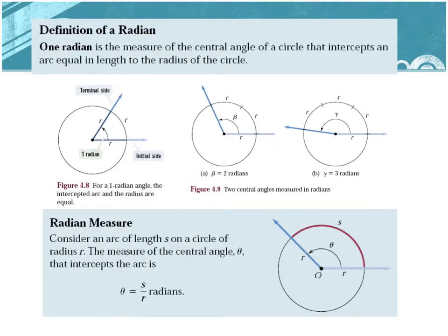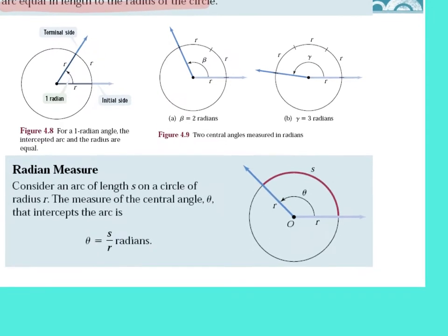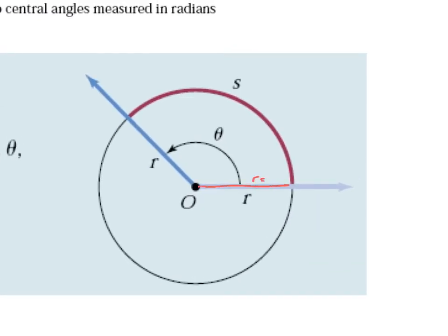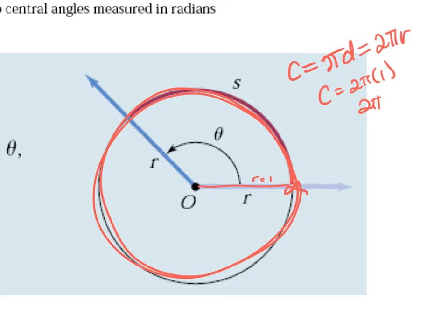There are two ways to measure angles: radians and degrees. A radian is the measure of the central angle of a circle that intercepts an arc equal in length to the radius. Most radian measures are based on a radius of 1. If the radius is 1, the circumference is 2π — that's 2 times 3.14, or approximately 6.28 units all the way around.